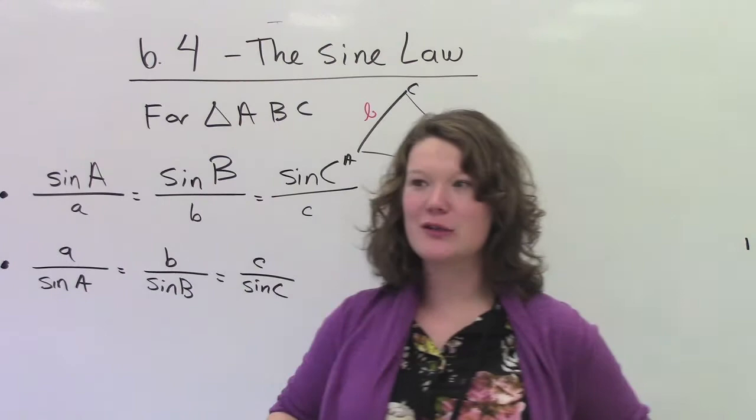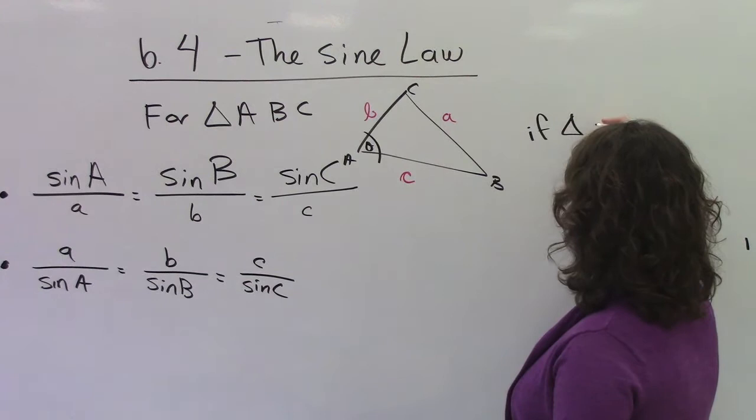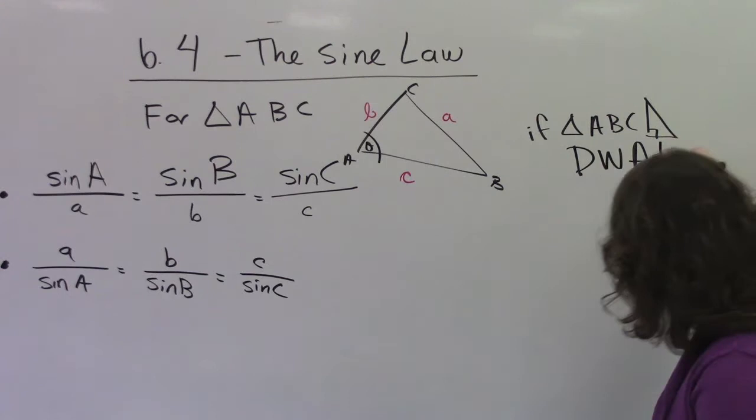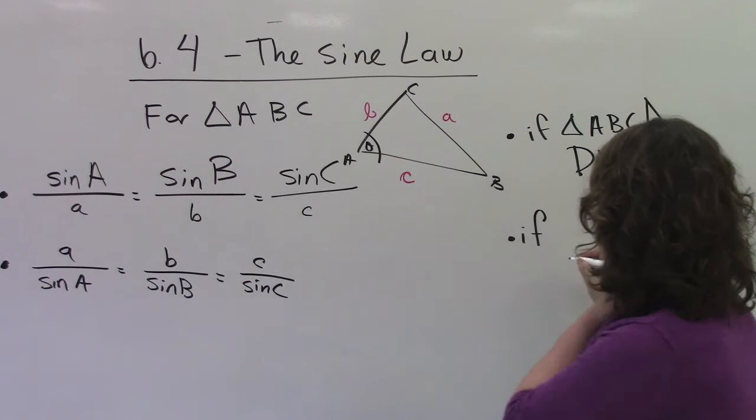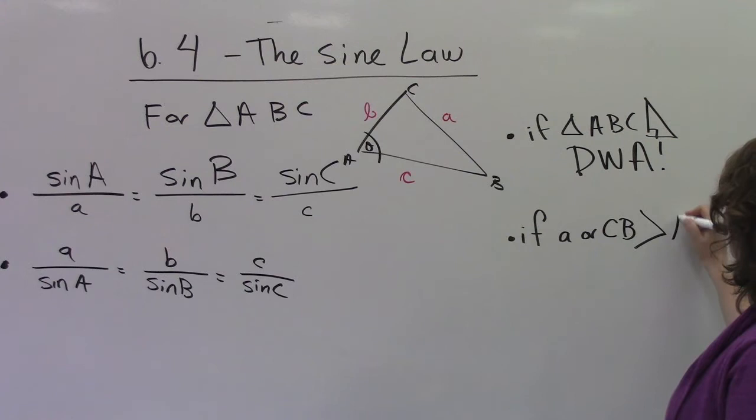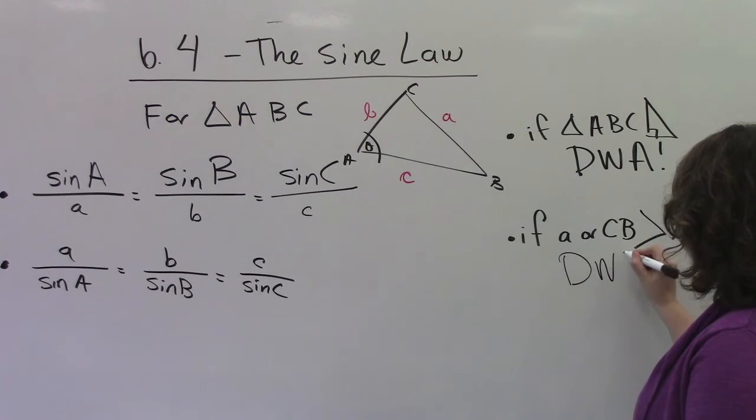So there are certain conditions under which we don't have to worry about the ambiguous case, and that is, if this right here is theta. If triangle ABC is a right angle triangle, don't worry about it! Don't worry about the ambiguous case! What else? If little a or CB is greater than B or C, so the opposite is bigger than B or C, don't worry about it!